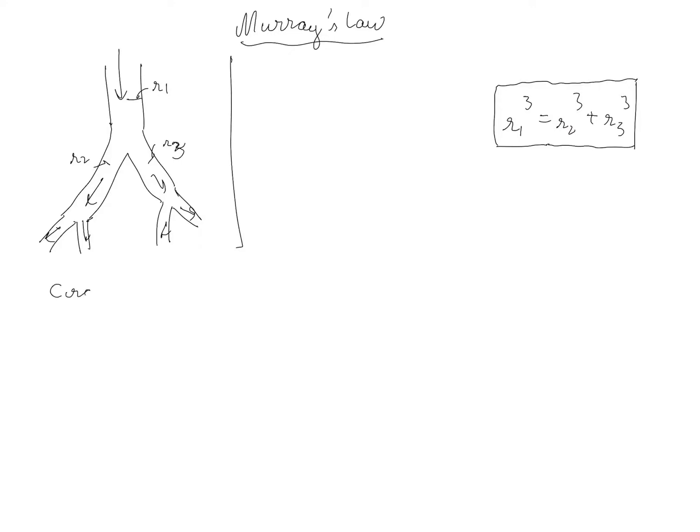This was for the circulatory system. If you do the same analysis for respiratory system, you have a bronchi in the lungs which bifurcates into bronchioles which further bifurcates into smaller bronchioles. So in this case air is going like so and you again ask the same question what is the relationship between r1, r2 and r3.